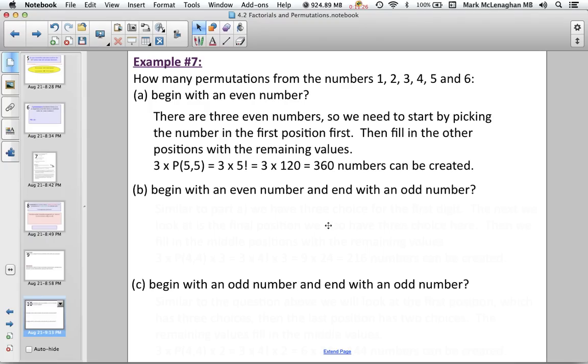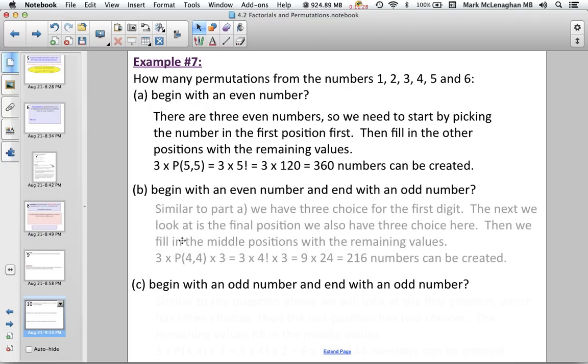What happens when we have an even number at the beginning, an odd number at the end? Similar to part A, we have three choices for the first digit. Then we have three choices for the last digit, which is odd numbers, which are 1, 3, and 5. Then we can fill in the middle positions with the remaining four, so after we make our two choices, we have four numbers left over. So then it's 3 times P, 4 times 3, or 3 times 4 factorial times 3, 9 times 24, which is 216 different.